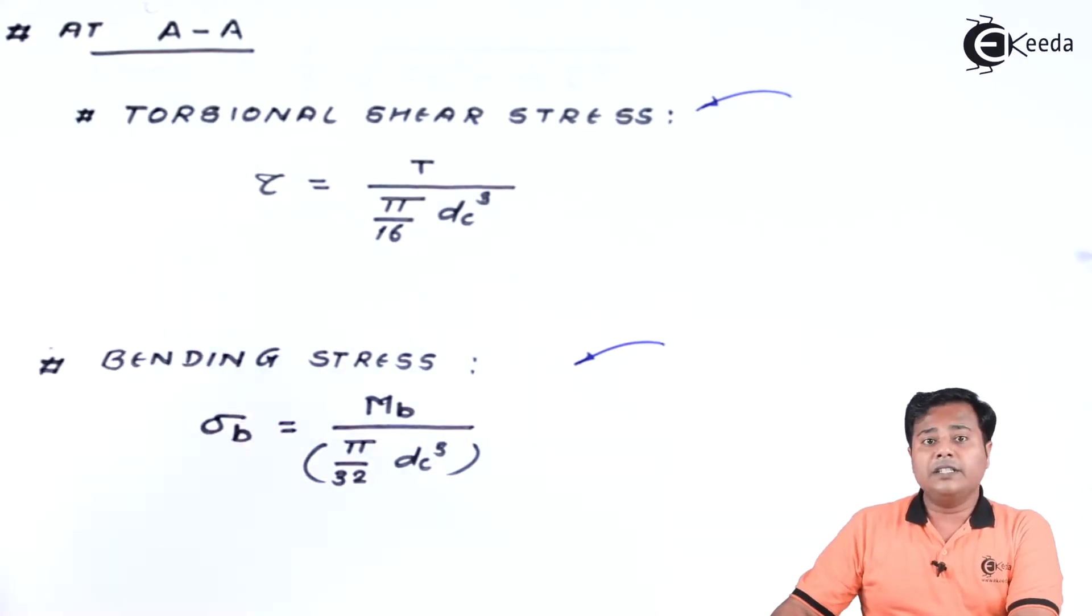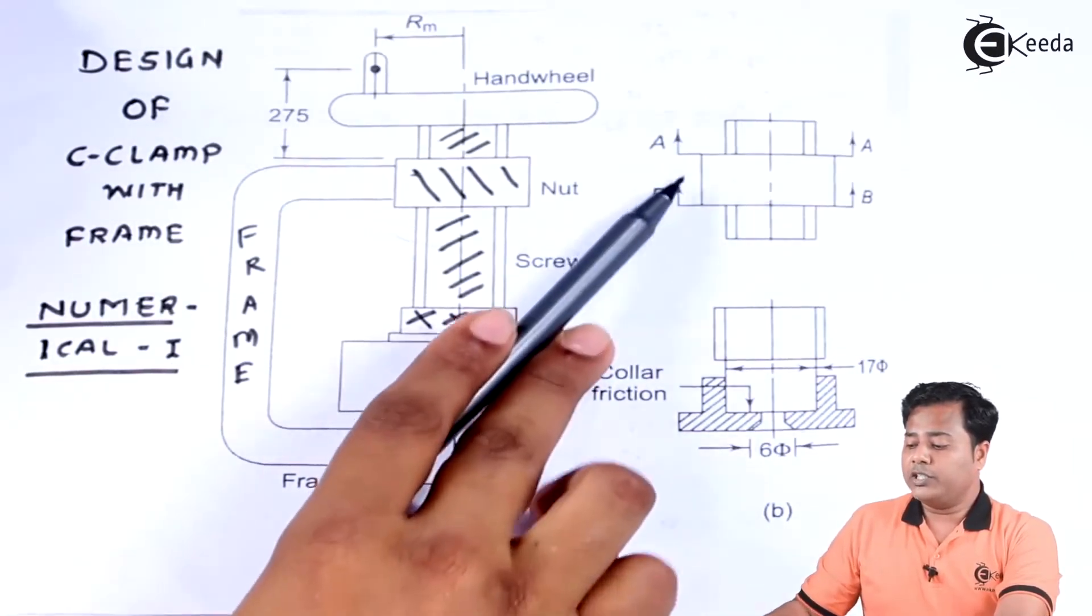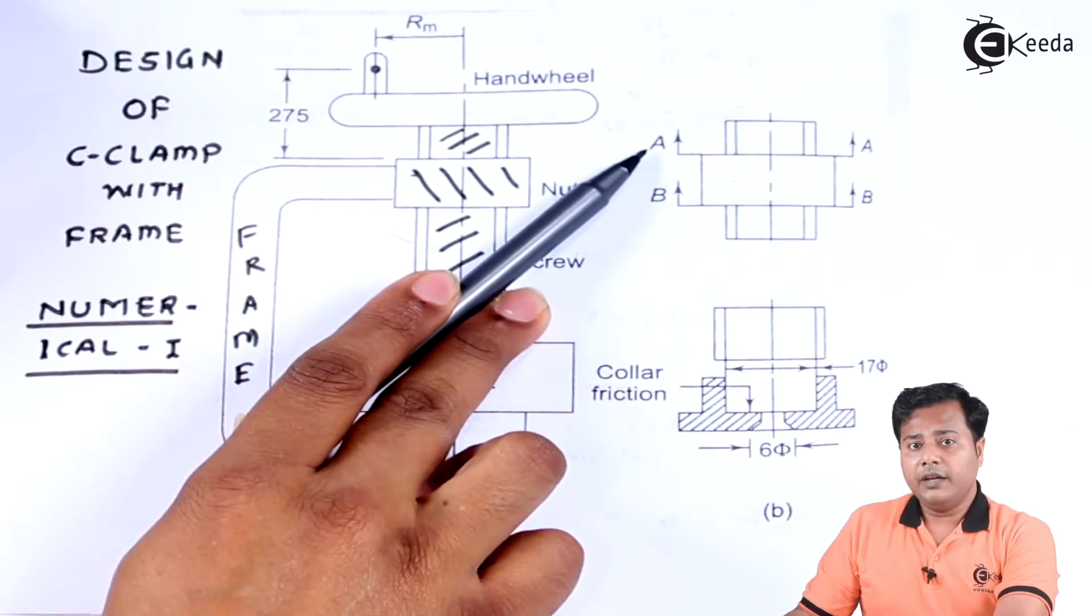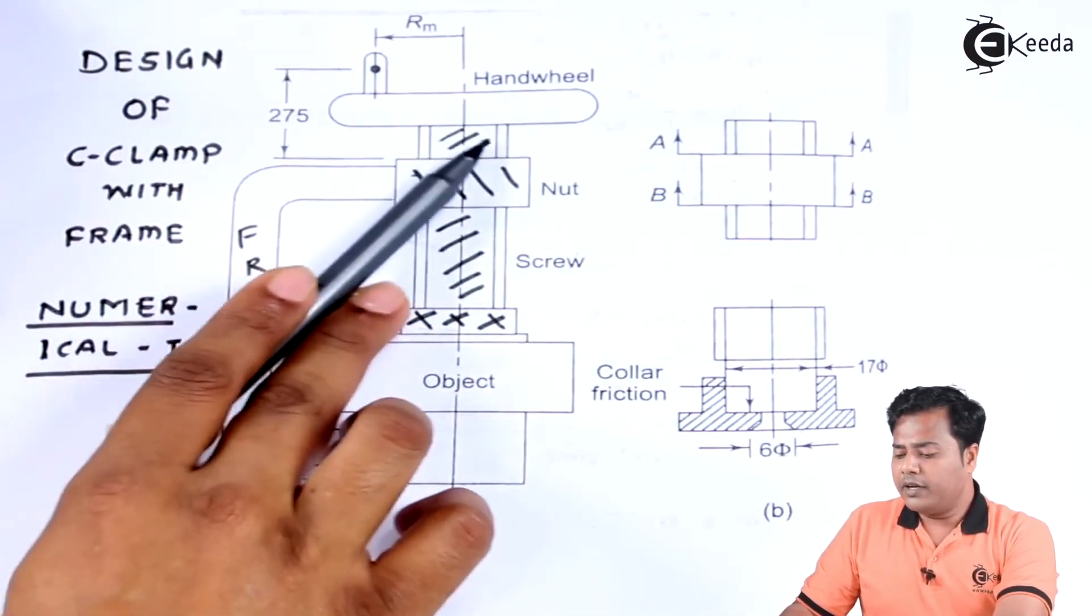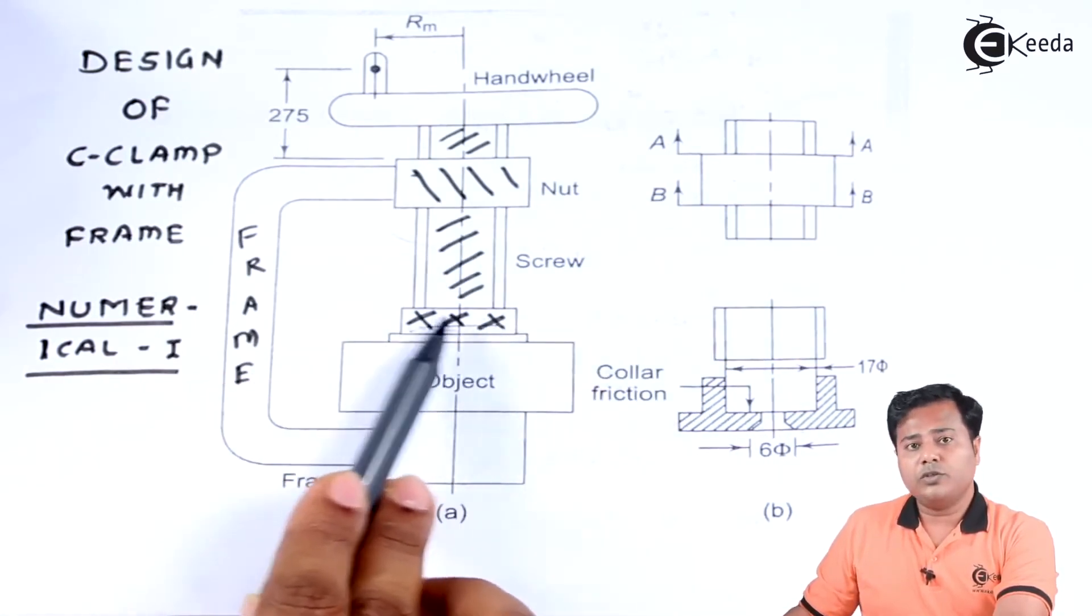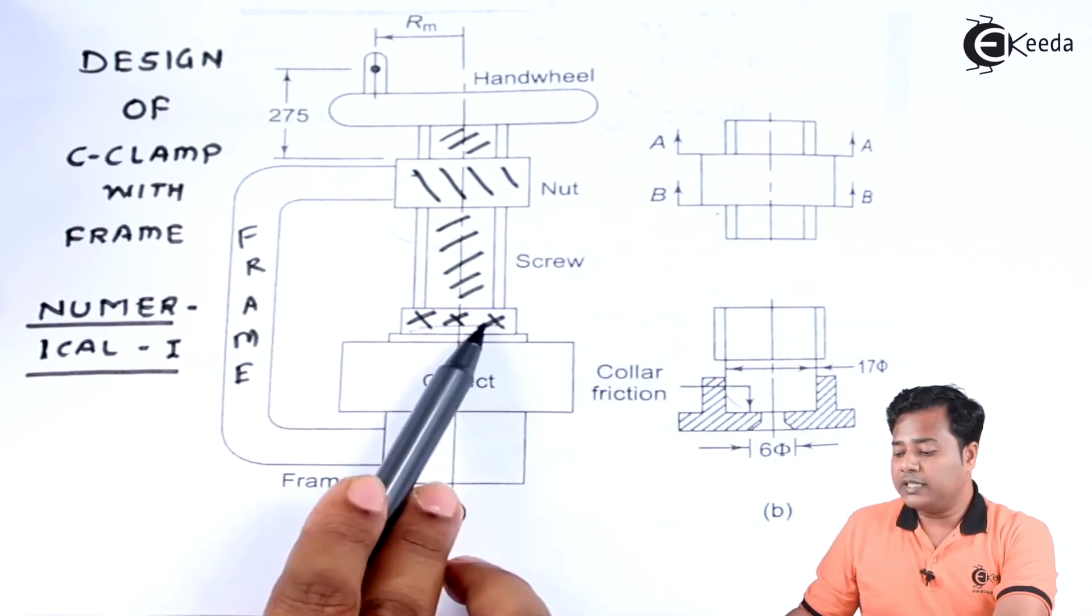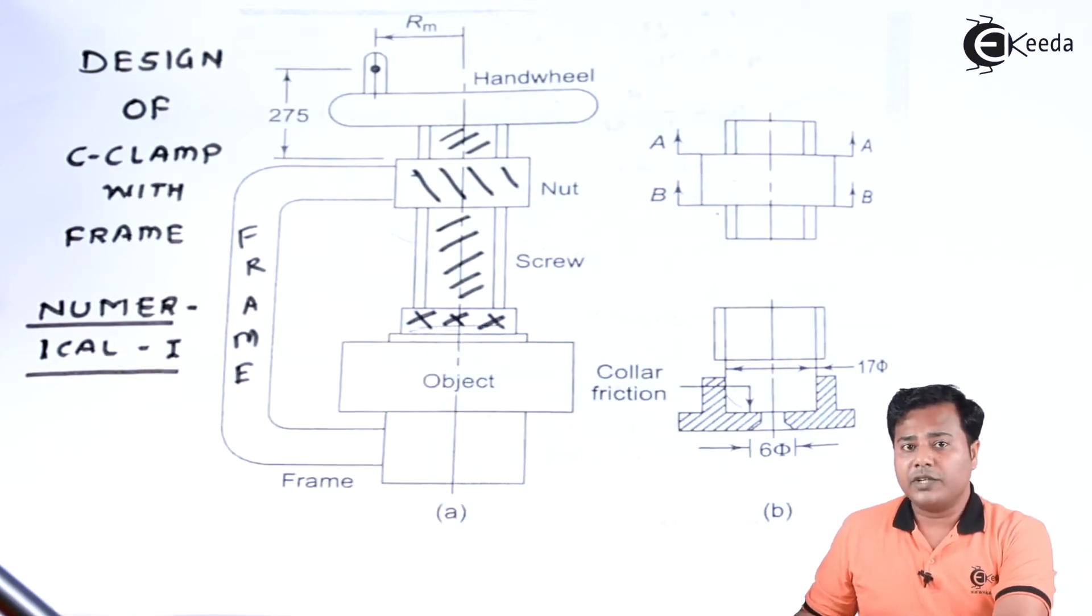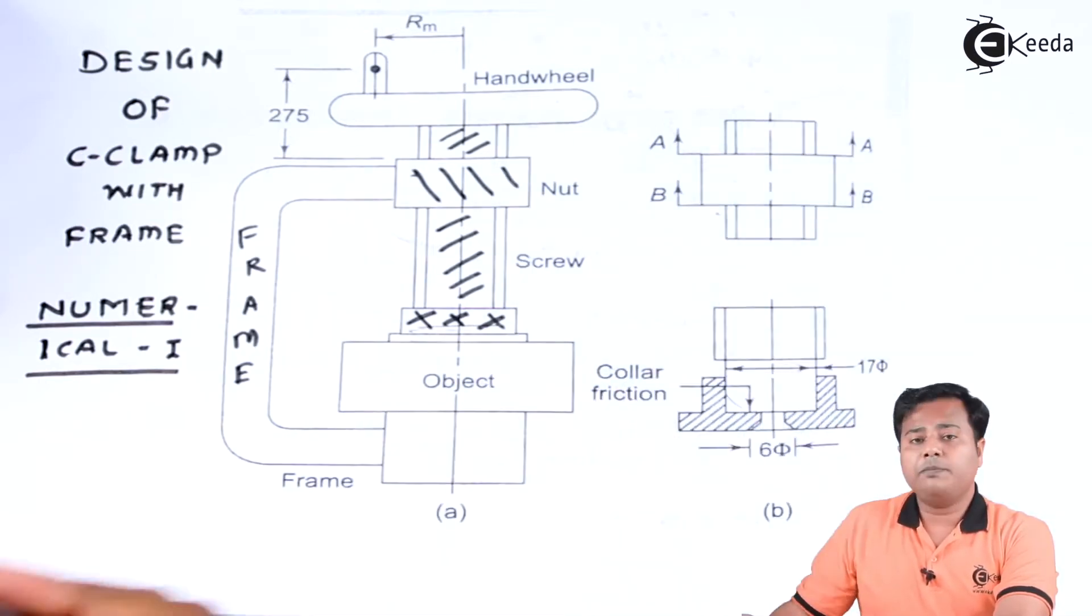So friends, as we discussed in the previous section, there are two sections possible. Let me show the diagram again where we have considered Section AA, where there is no collar present for the screw anywhere in this region, and Section BB, where the collar part is also present for the screw. We know that whenever there is a collar present, there is an additional stress due to the collar friction. Whenever it is not present, it is purely the torsion as well as the compression.